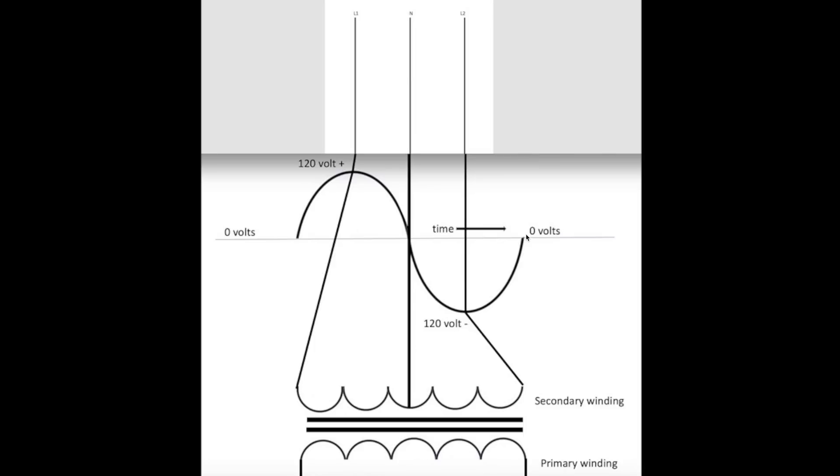And then back to zero again. That's the way alternating current works from the generating plant. Now this 120 volts we're showing here, it's not exactly 120. It's more like 150, but our meters all average this thing, and so it comes out around 120.